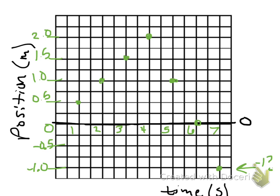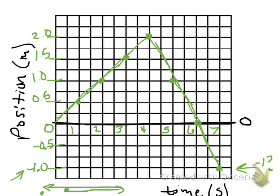What does negative 1 mean in terms of position? It means he must have started some place, went all the way over to 2 meters, but then decided to go all the way back and ends up 1 meter behind where he started. We know it's behind because that's where the negative comes from. So if we connect the dots — really we're drawing a best fit line, it just happens to be very straight — we see a very linear line going up, then right here he turns around and goes back.